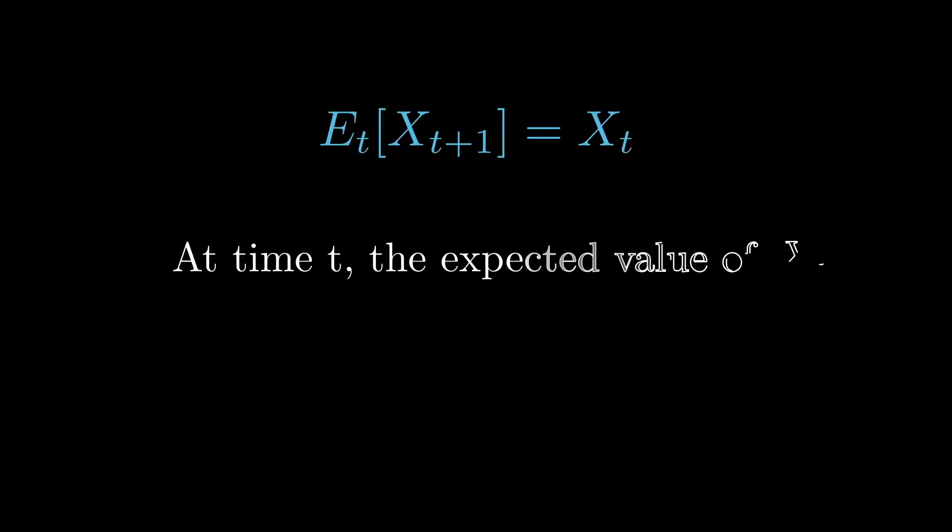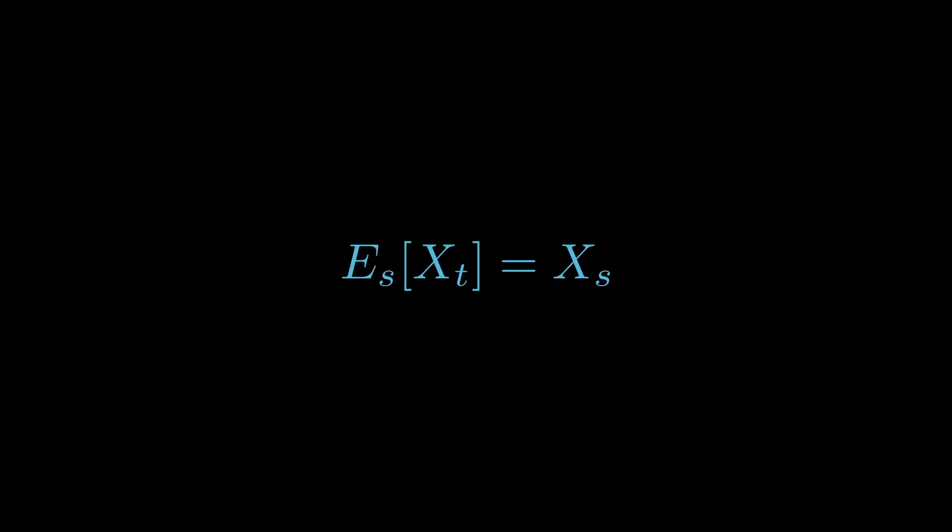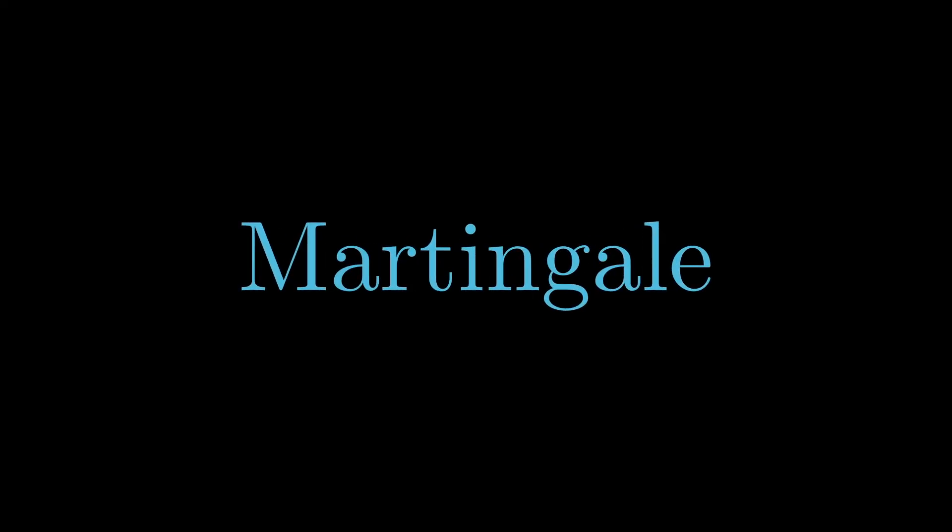So what is the easy way of interpreting this expression? Basically, at time t, the expected value of the next step is on average what we're starting at right now. Now using some sort of recursion, we can say not just for one step, but for all s less than t. And that is the definition of a martingale.